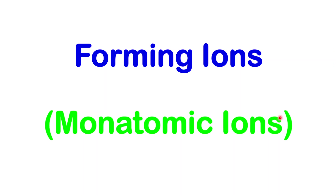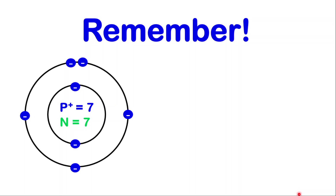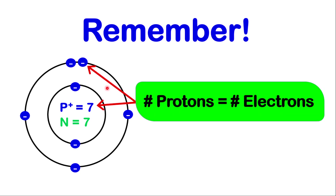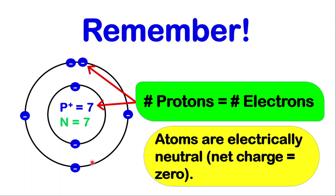Before I get into the details of this lesson, I want you to remember a few things. The first thing is that within an atom, the number of positive particles are equal to the number of negative particles. In other words, the number of protons are equal to the number of electrons. For example, the atom being displayed has seven protons and also seven electrons. Based on this reasoning, we can clearly state that atoms are electrically neutral — the net charge or total charge equals zero. This is because the positive particles cancel out the negative particles.